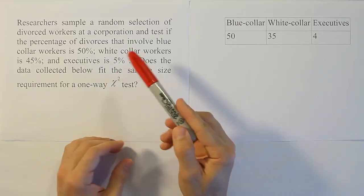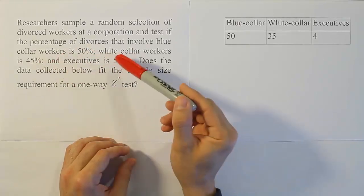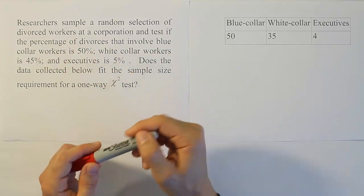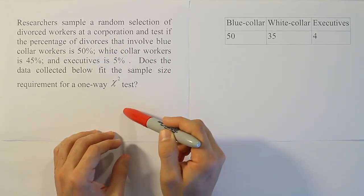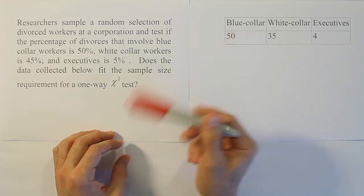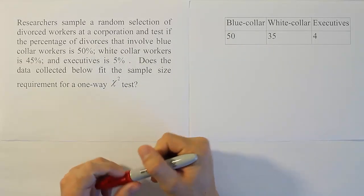The way we're going to do that is we're going to look at the percentages that are given to us, and we're going to say that our expected value is the n, the total sample size, times the probability that we expect for that category.